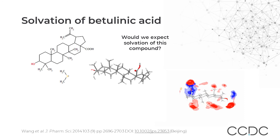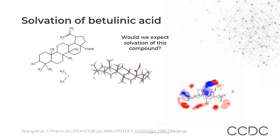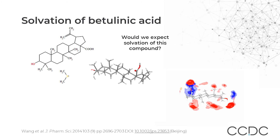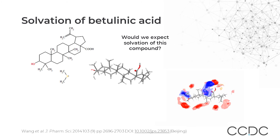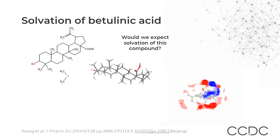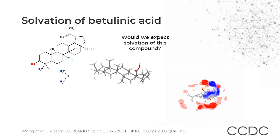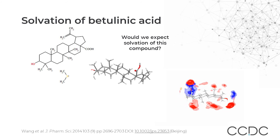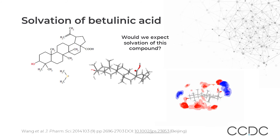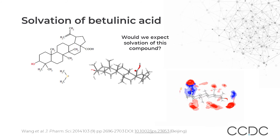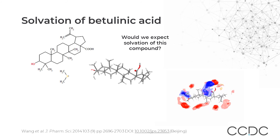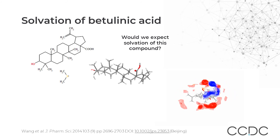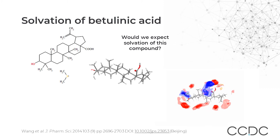Betulinic acid is also an interesting case — it's a naturally occurring plant-derived compound that has been studied in relation to a number of areas of activity, including anti-tumor, anti-HIV, anti-inflammatory, anti-bacterial, and anti-malarial effects. The conformation of this structure is highly inflexible. Based on the CSD data, we can expect the full interaction maps to help identify preferred interactions and provide an idea of the solvation status of that specific compound.